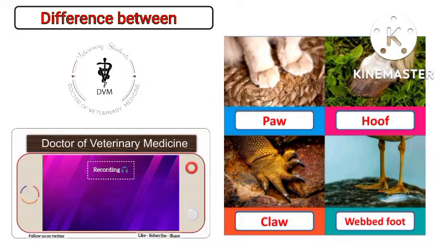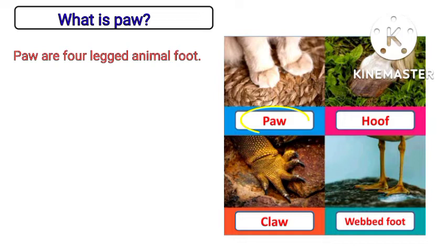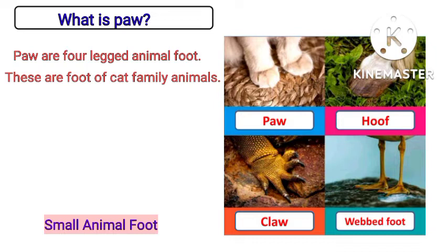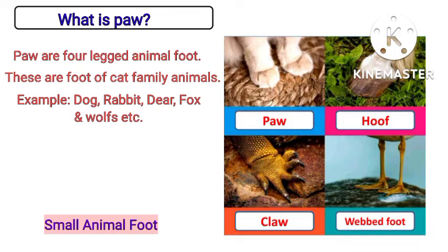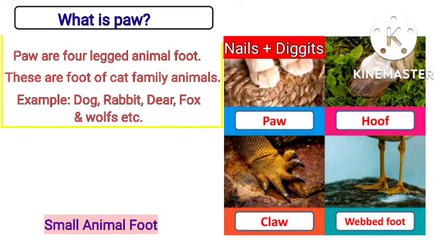What is a paw? Paws are four-legged small animal feet. Paws are the feet of cat family animals and dogs, rabbits, bears, foxes, and wolves. Moreover, paws have nails and digits in some animals, as you can see in this picture.